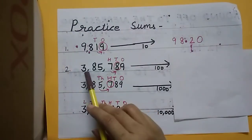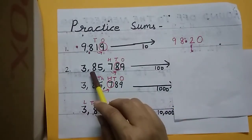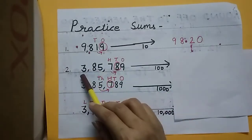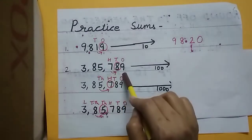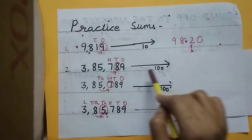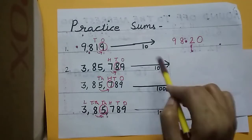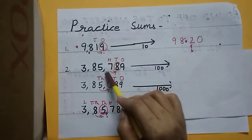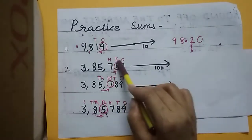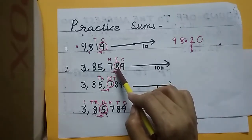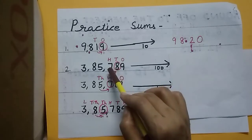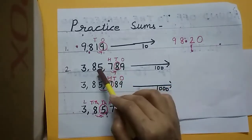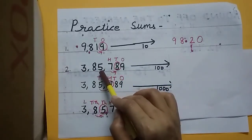One more practice question: the number is 3,85,789. First, read this number — three lakh eighty five thousand seven hundred eighty nine. The question is round off to the nearest hundred. Write down ones, tens, hundreds. Just right of the hundreds place, circle the digit — eight. Eight is more than five, so it will become zero. Seven will become eight, nine will become zero, and no change for three, eight, and five.